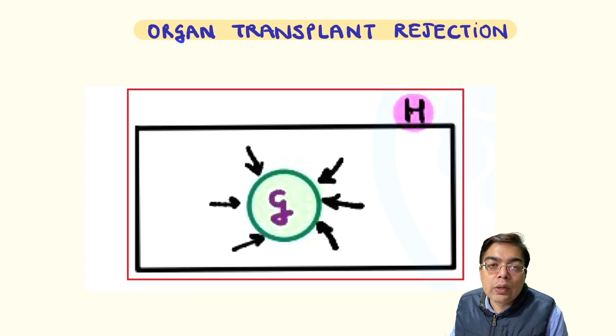Or it can take place within a span of a few days to weeks, then that's an example of typically an acute transplant rejection. This can be because of cells, acute cellular rejection, or it can be because of antibodies that is given the name of acute humoral rejection.